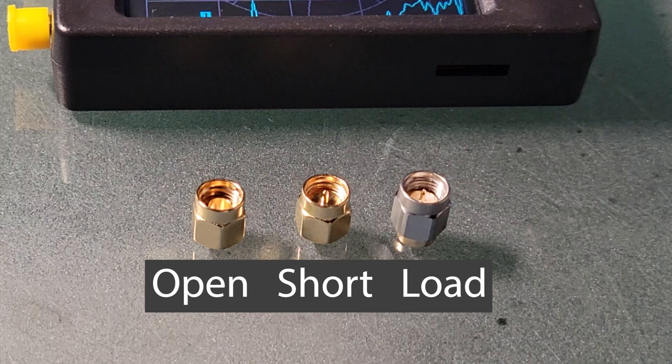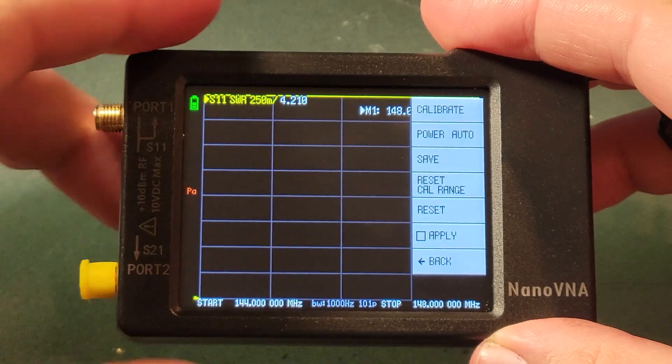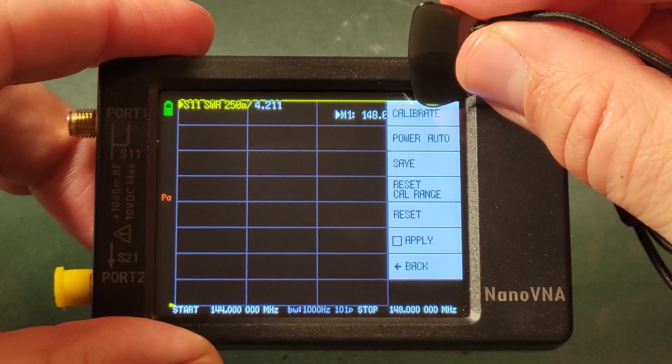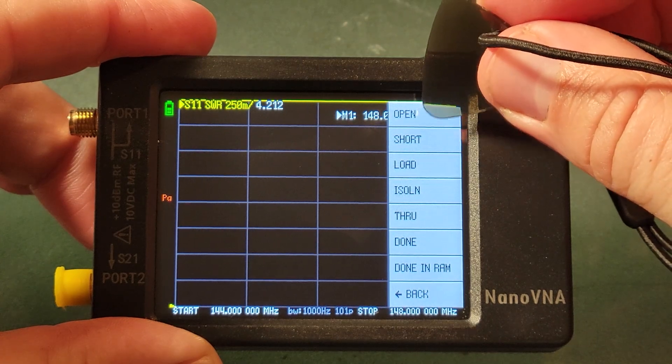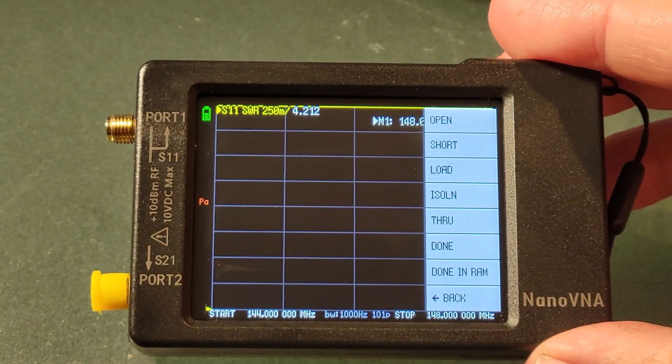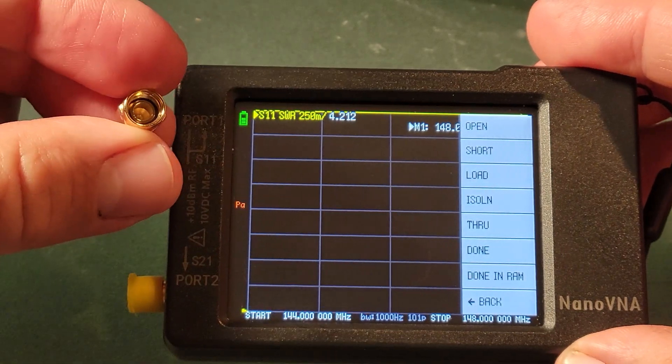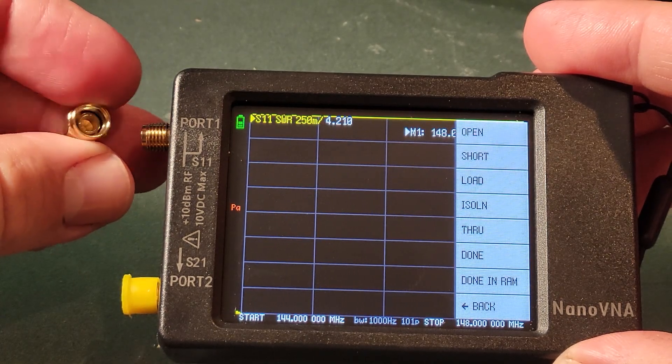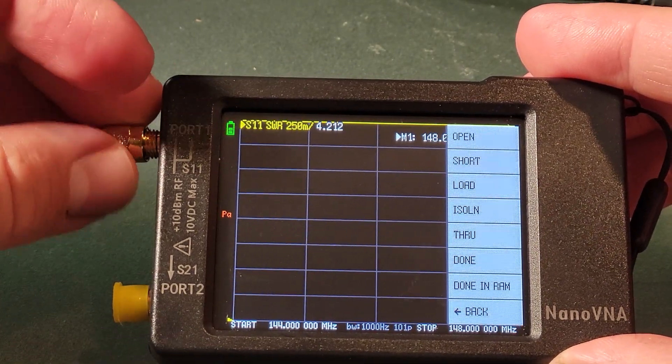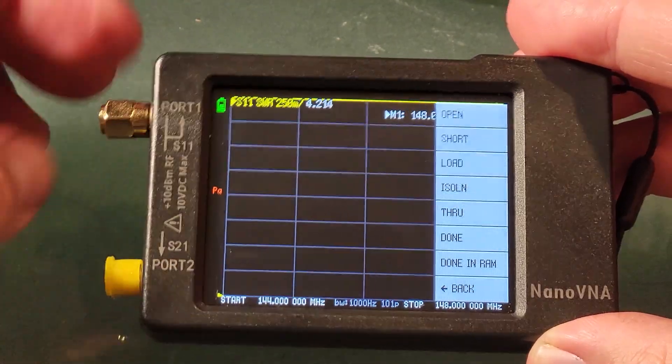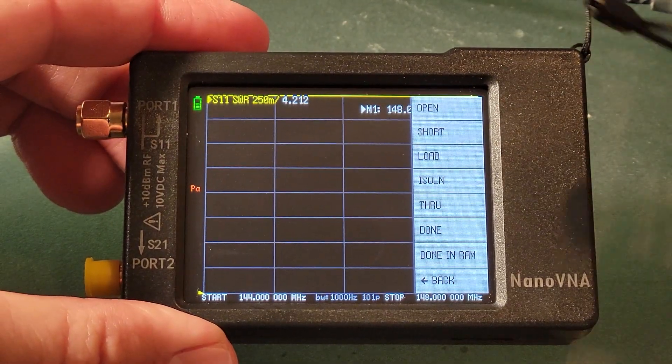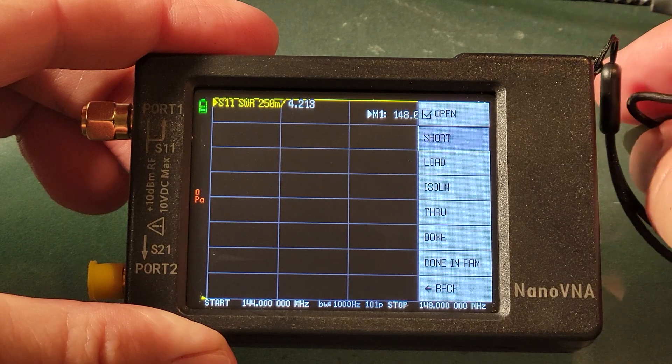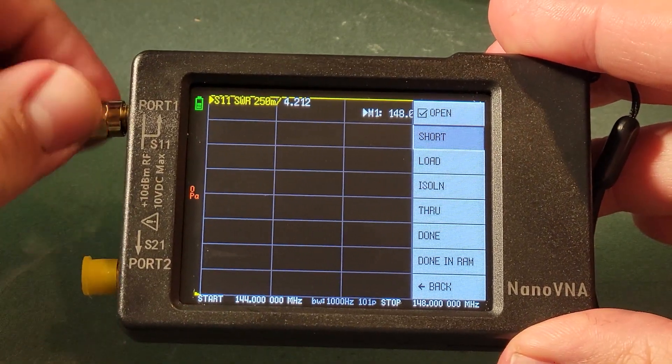We will be starting with the open and you can see the correct order to do this by digging a little bit further down here in the menu to calibrate and it'll tell you open, short, and load. So we'll start with our open. Notice that this cap does not have a pin in it, also known as the open. So we'll thread that on quickly and we will tap the open button with our guitar pick and watch at the very top of the screen as I do that a blue line goes across there giving you a progress and we get a check mark indicating that that task is complete.